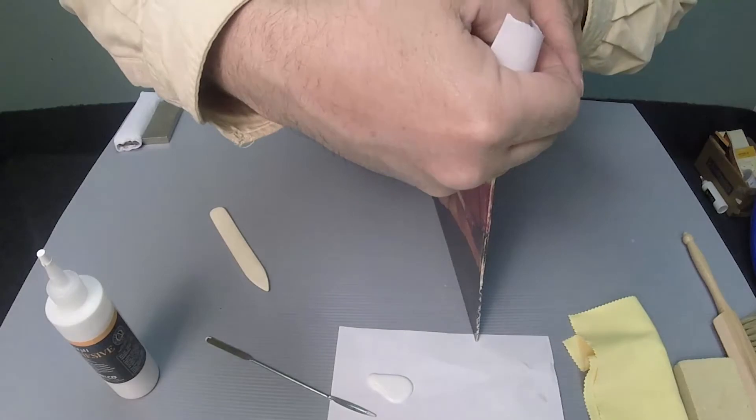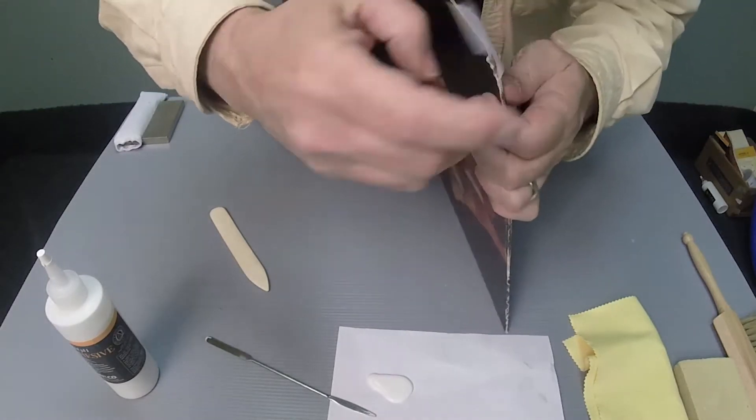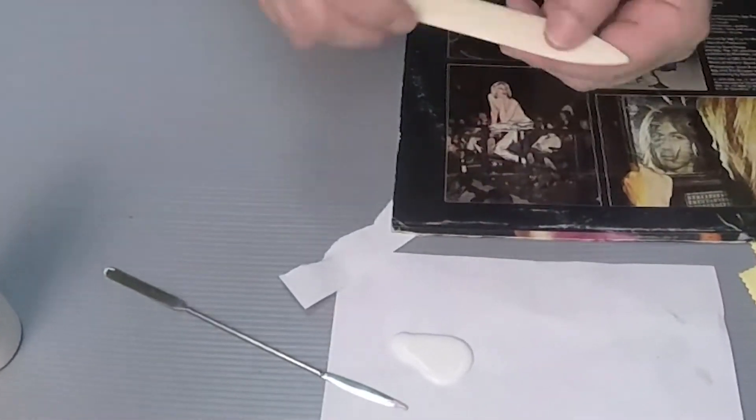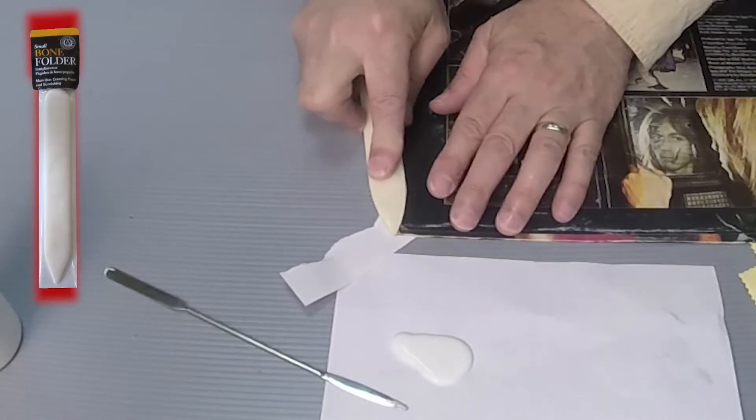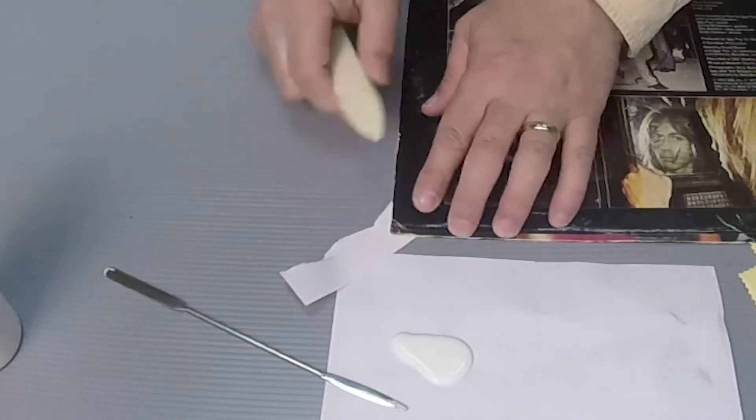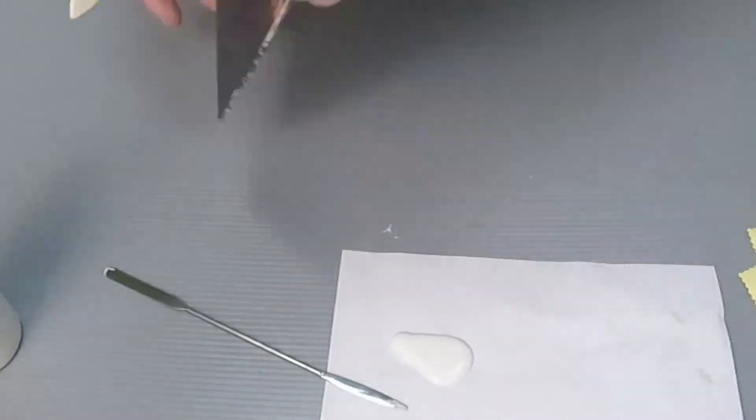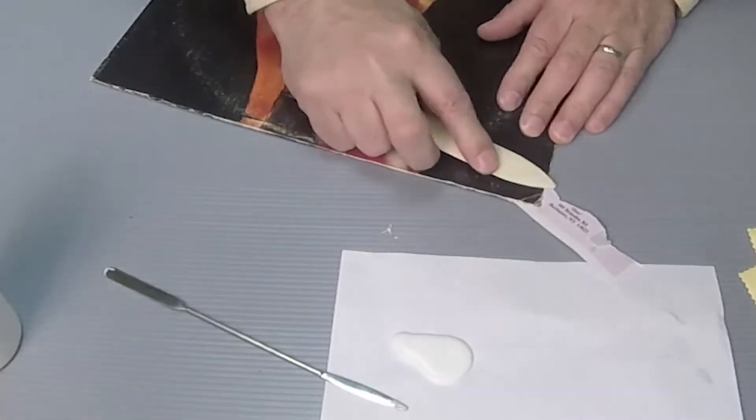Now I am going to use a scrap paper to keep the two sides separate while I flatten the corner with a bone folder. The bone folder is the best tool for manipulating paper. It can flatten or crease without scratching or gouging the artwork.